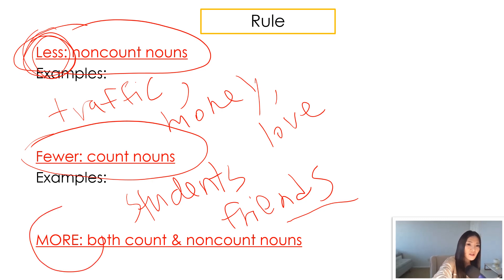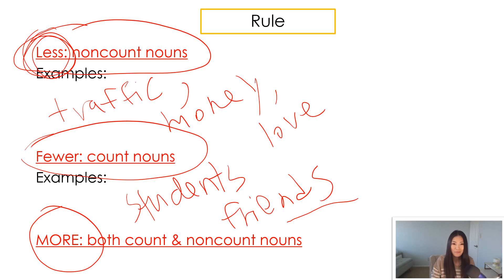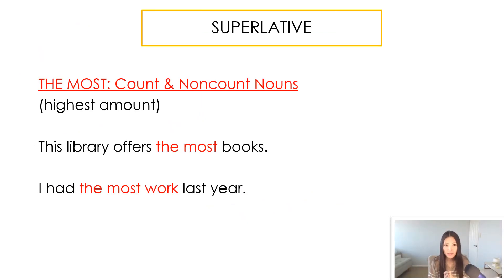So 'more' — when we're talking about an increasing amount — can be used for both count and non-count nouns; it doesn't matter. But once we're talking about the amount decreasing, you have to consider whether that noun is a count or non-count noun.